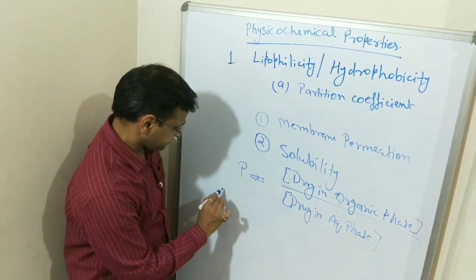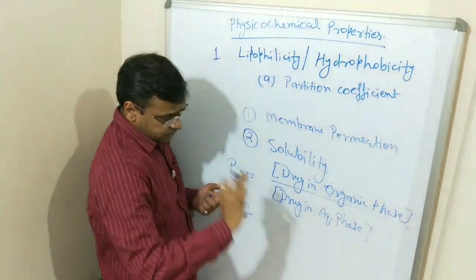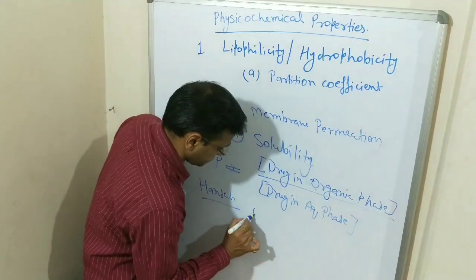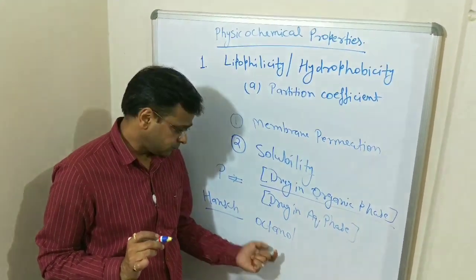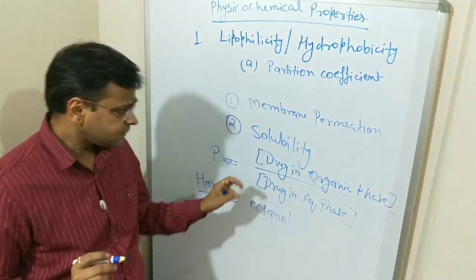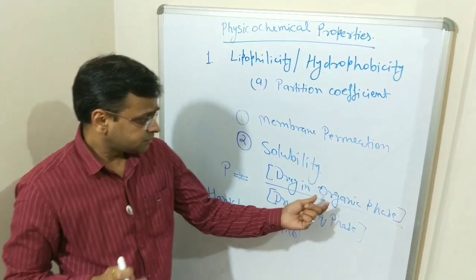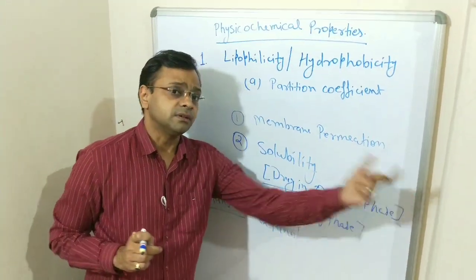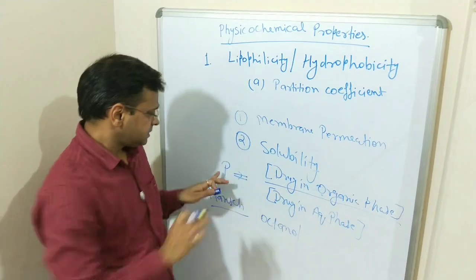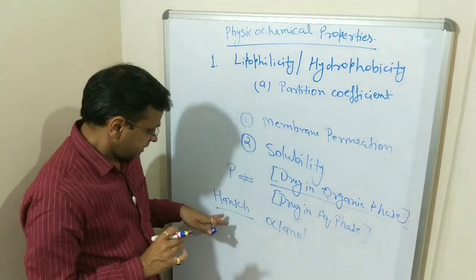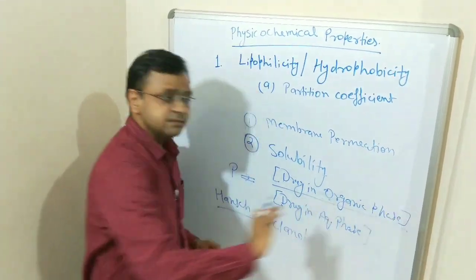Hansch was a scientist who replaced all organic solvents with octanol, and octanol was used as the organic phase for the determination of this partition coefficient. Because what happened with different solvents? Suppose someone was using ethanol, someone was using methanol, chloroform, and a number of variations. There was a lot of variation found in these partition coefficient estimations. And when this was standardized by octanol, all these variations were rectified.